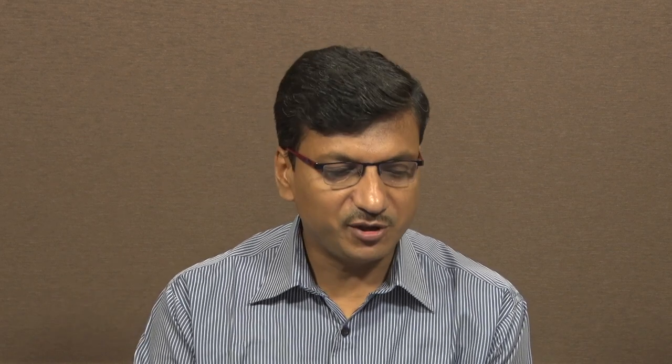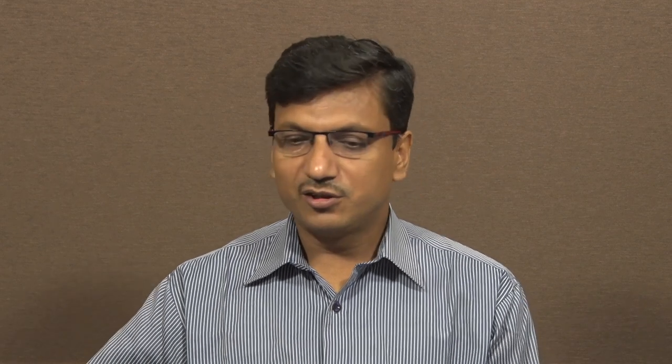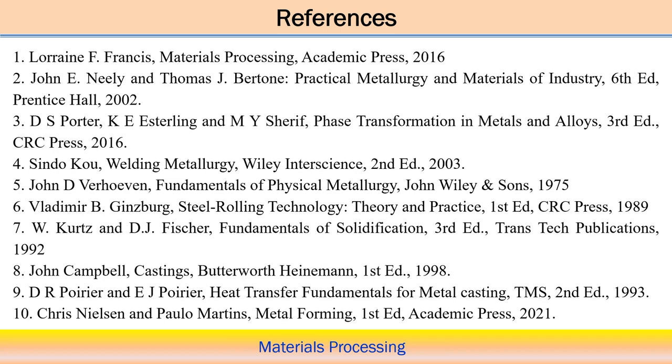Topics not covered under conventional manufacturing processes will be addressed under non-conventional processing, mainly focusing on coatings on different types of materials. We will also have some discussion on steel processing and the solidification flow in the steel industry, supported by case studies. I have also added a module on electronics, magnetic, and optic materials — how they can be processed and what manufacturing processes are involved in developing components from these materials.